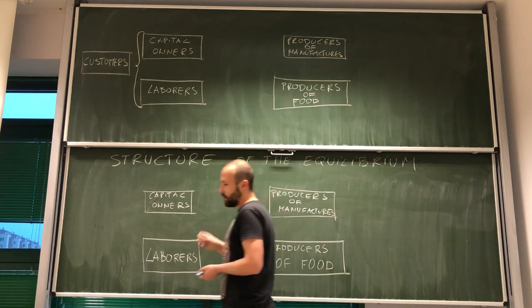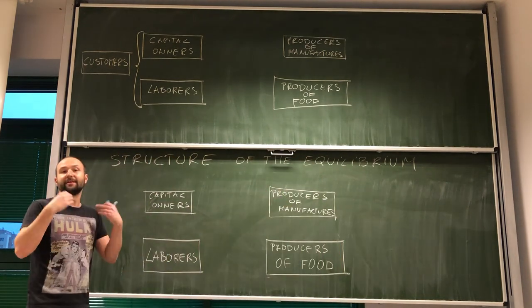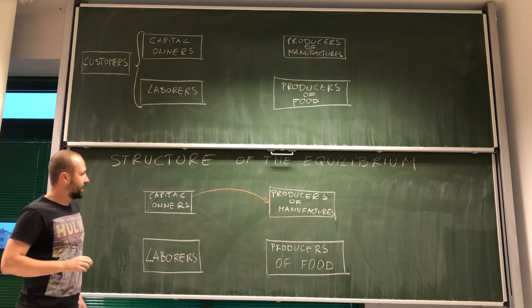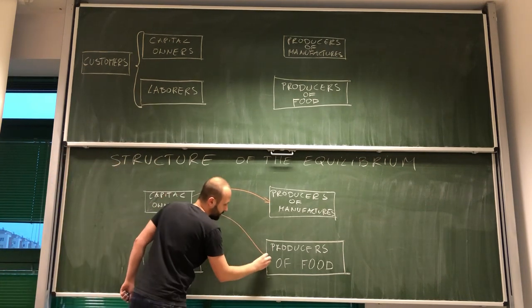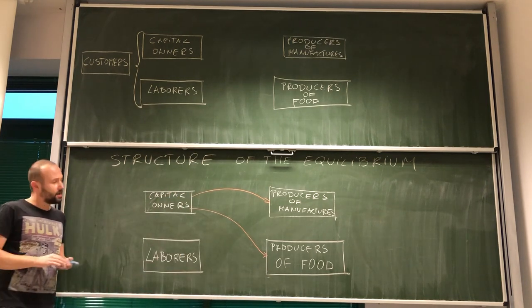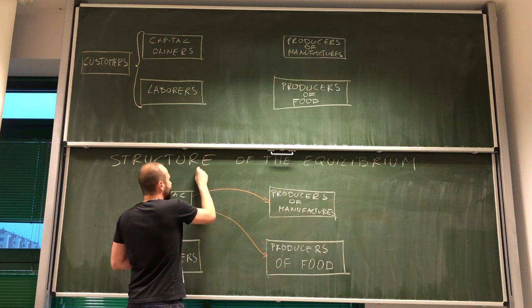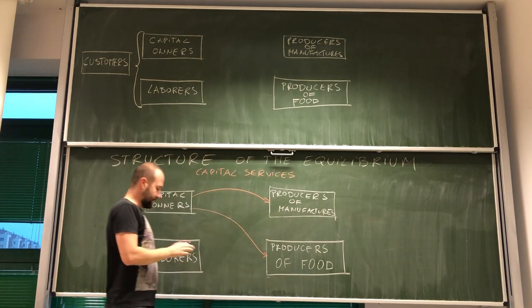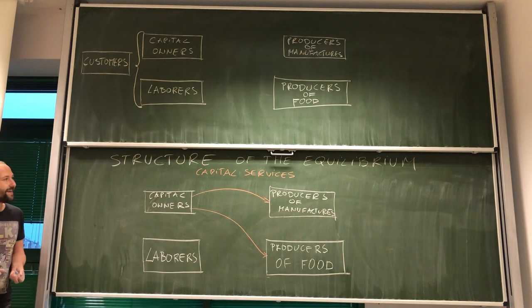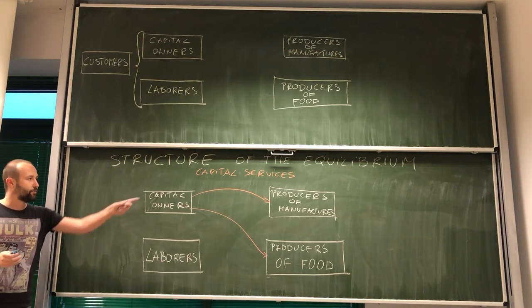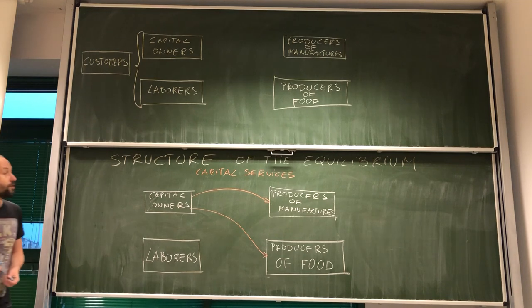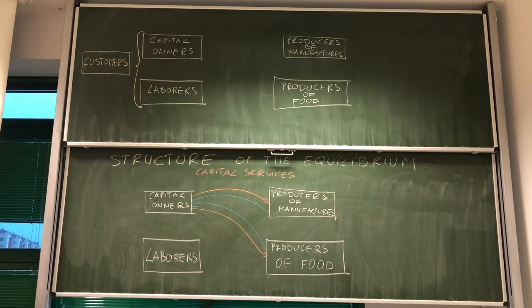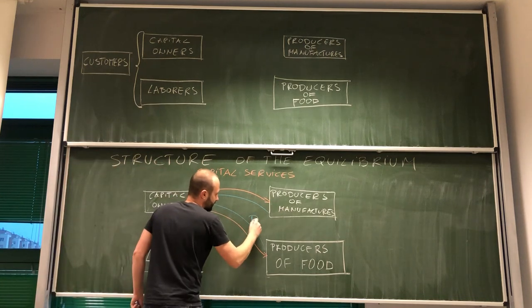So let's start with capital owners. What do capital owners do? Well, they rent capital to producers of manufacturers or to the producers of food. So, what they do actually is they provide capital services.